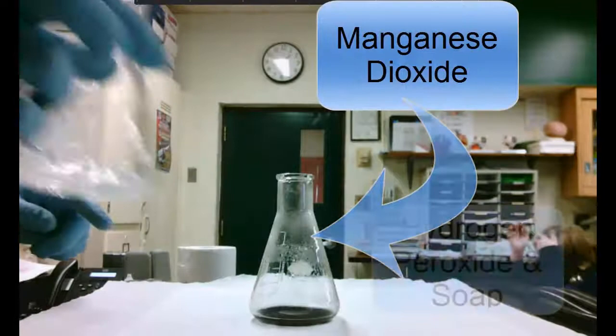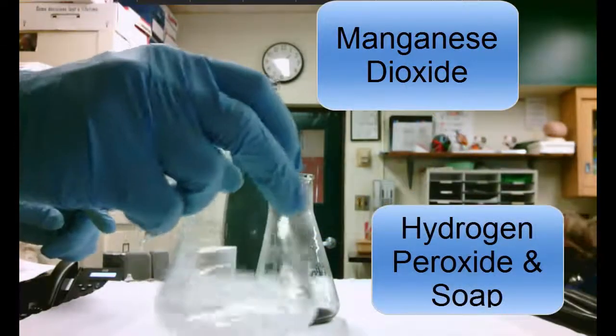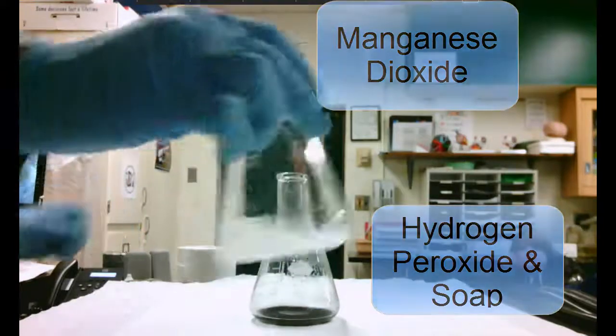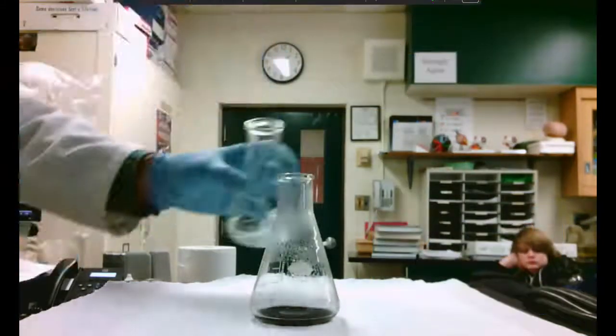So we have manganese dioxide, the catalyst, in one flask and hydrogen peroxide and soap in the other. Notice how not many bubbles are being produced in the hydrogen peroxide and soap.